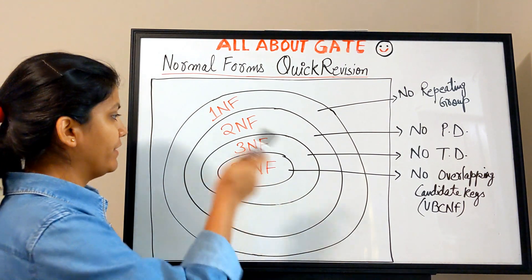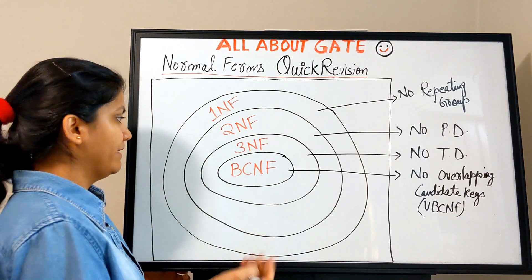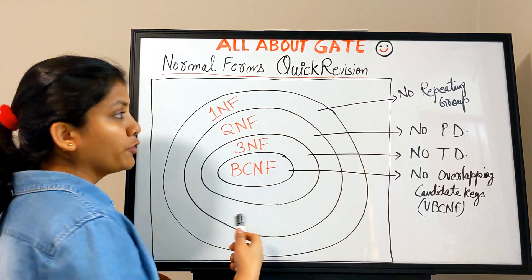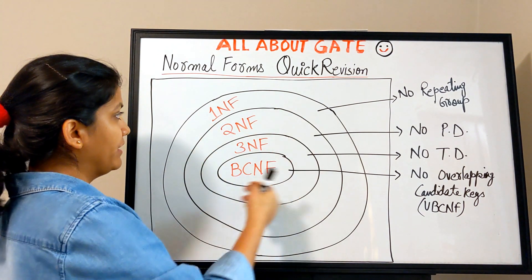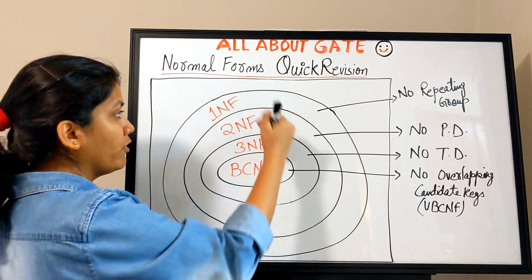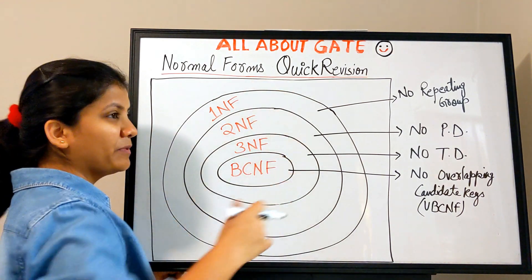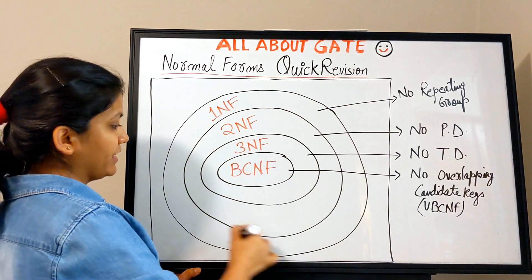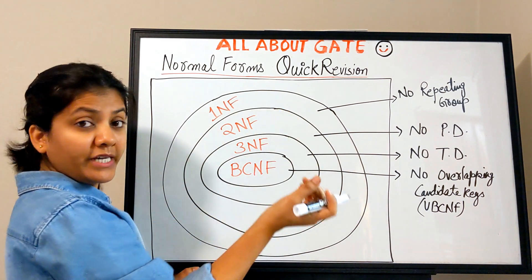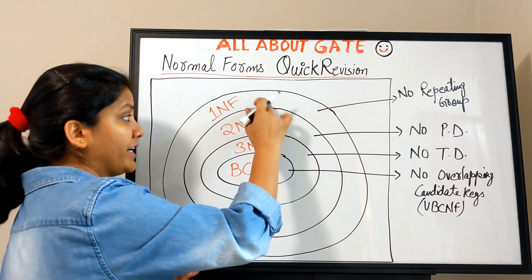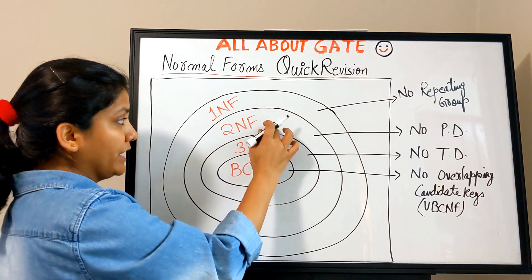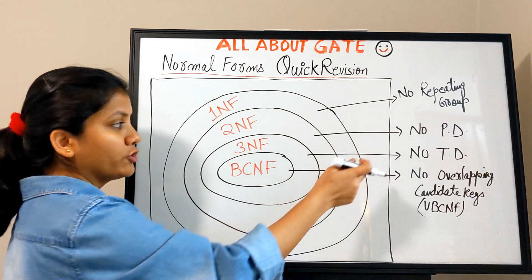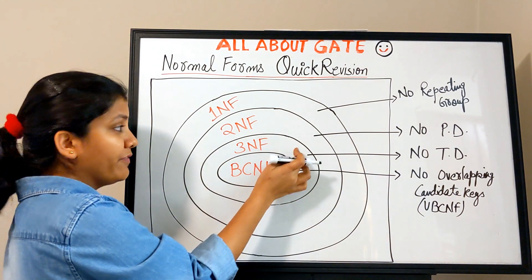I'll represent this with a diagram to show more clearly who is more strict and who is a part of what. In the universe of discourse, the outermost level represents 1NF — the most loosely bound. If you put one more condition and take a subset, you leave some relations that are only 1NF but not 2NF. That smaller subset, with the added condition, becomes Second Normal Form.